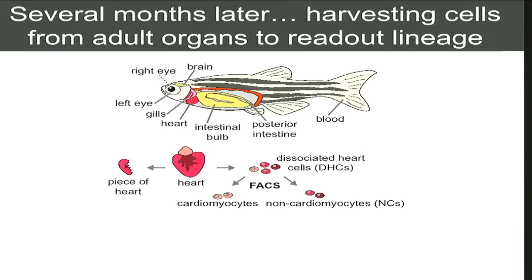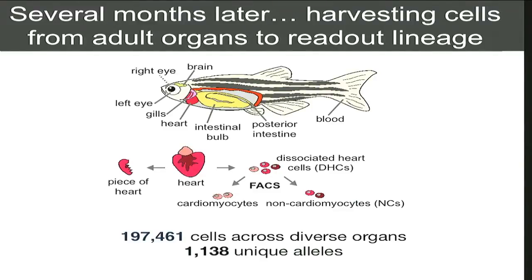We did a more focused analysis in the heart where we took off a chunk and also sorted out cardiomyocytes and non-cardiomyocytes. One nice thing about using sequencing is that you're able to sample an incredibly large number of cells — here we're able to look at nearly 200,000 cells from diverse organs. But these boil down to around 1,000 alleles, so we're seeing each allele in many cells.